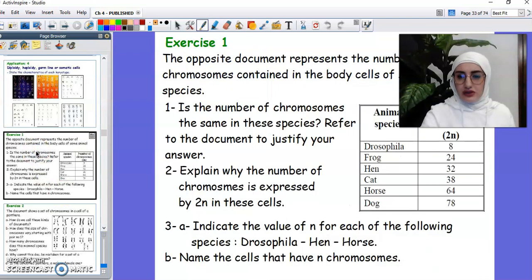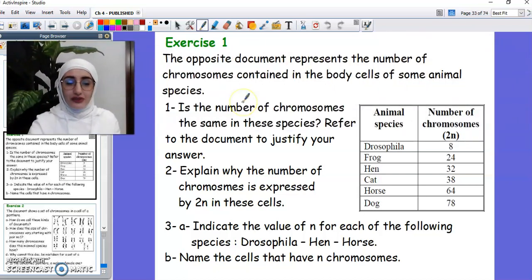Now this is a question from the official exams. Honestly I do not remember the year, because I've been teaching grade 9 for five to six years but then I stopped two years. So these two years my memory, I forgot the year. Anyway, you students know it more because you should be studying by now the official exams, especially the lessons that we already taken before. So the opposite document represents the number of chromosomes contained in body cells of some animal species. And what we mentioned before is that the number of chromosomes, which is 46 in humans, is not the same in animals. So it's different from one species to another. This question is about this issue.